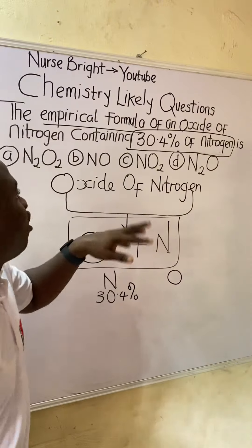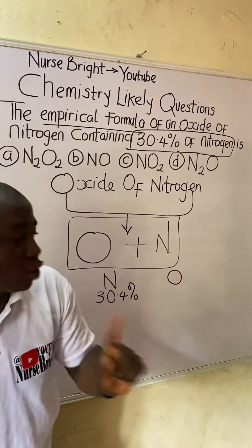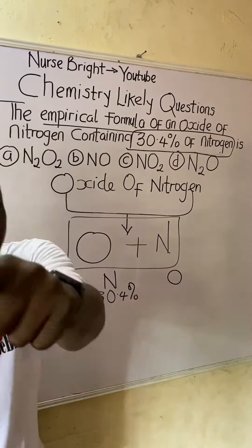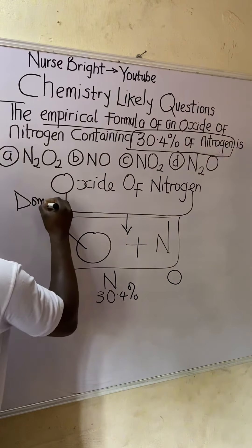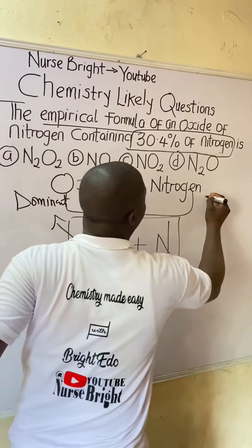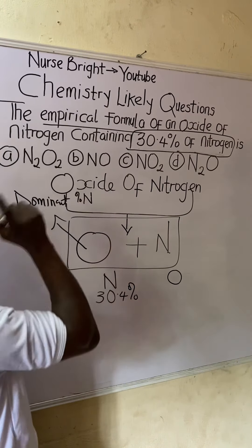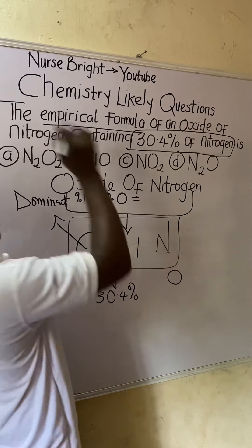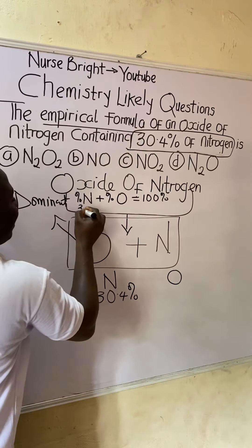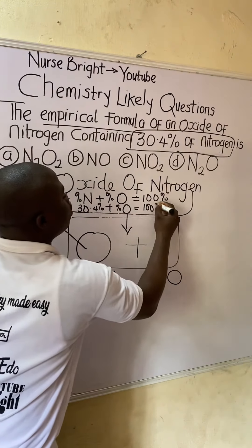Some students think the question is incomplete — it is not. What you have to do is determine the percentage of oxygen. Since the compound is an oxide, percentages must add up to 100. So: percentage of nitrogen plus percentage of oxygen equals 100. That gives us 30.4 percent plus percentage of oxygen equals 100.